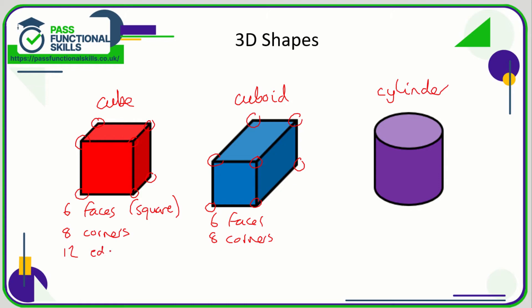So 12 edges, and that's exactly the same for the cuboid as well: one, two, three, four, five, six, seven, eight, nine, ten, eleven, twelve. In terms of angles, each face is a square, and a square has four angles, so in total there are six times four, which is 24 angles.